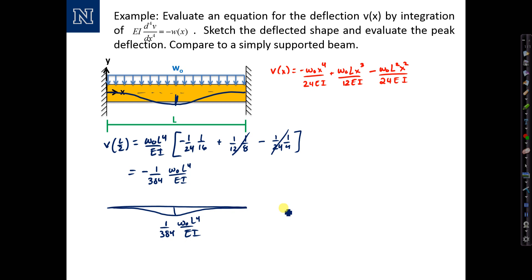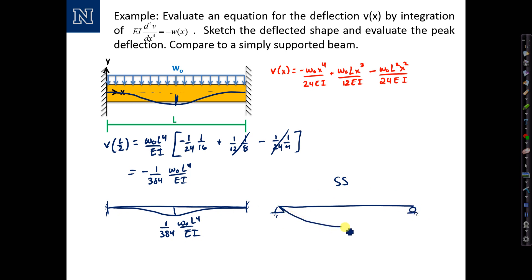Now recall the result for a simply supported beam — where you don't have fixity at the ends but rather pins, which allow rotation at the ends. The peak deflection in that case was 5·W-naught·L⁴/(384EI). So by providing fixity at the ends of the beam, we reduce the peak deflection by a factor of 5.